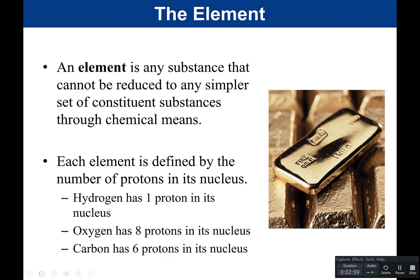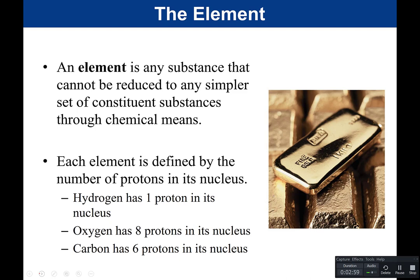Life requires 25 essential elements. The main four that make up about 96% of the human body would be oxygen, carbon, hydrogen, and nitrogen. These four elements make up 96% of the human body.